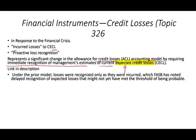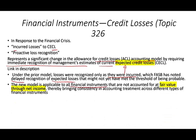Under the prior model, losses were recognized only as they were incurred, which means there was a delay in the recognition of expected losses. After the financial crisis, banks were booking billions with a B of losses — that's why they implemented this. The new model is applicable to all financial instruments that are not accounted for at fair value through net income, bringing consistency in accounting treatment across different types of financial instruments.